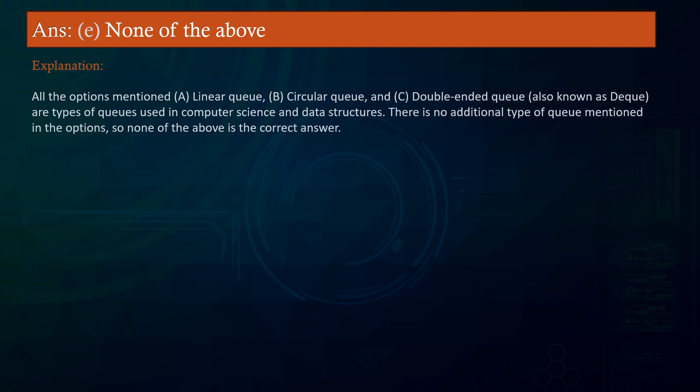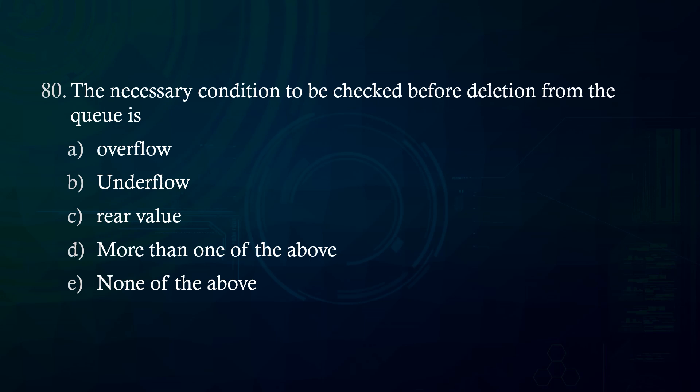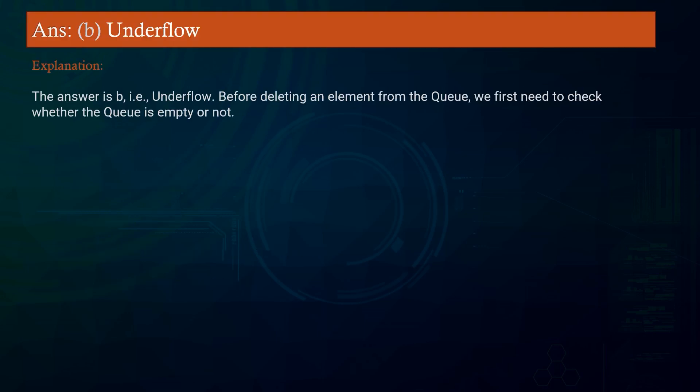The necessary condition to be checked before deletion from the queue is: A. Overflow B. Underflow C. Rear value D. More than one of the above E. None of the above. Answer: Underflow. Explanation: The answer is B — Underflow. Before deleting an element from the queue, we first need to check whether the queue is empty or not.